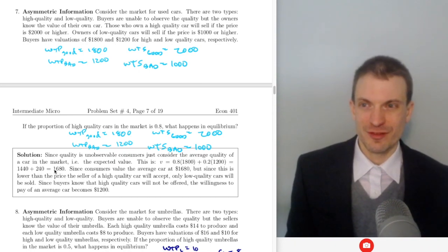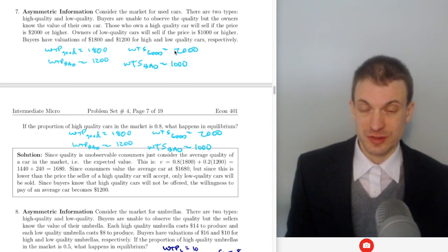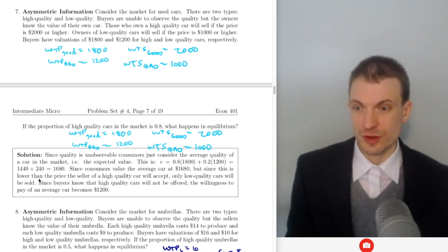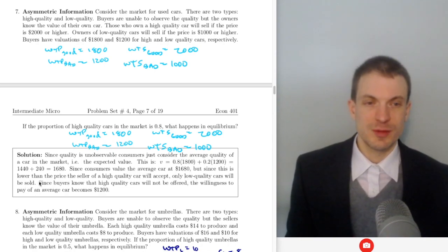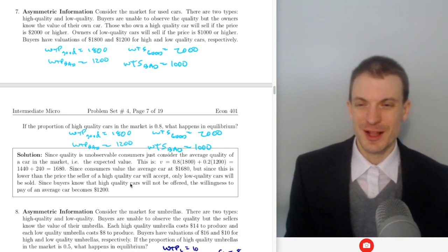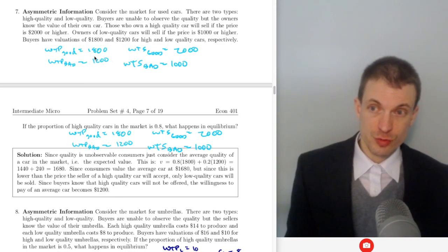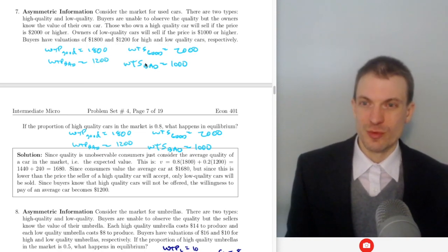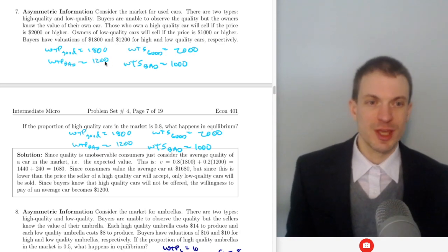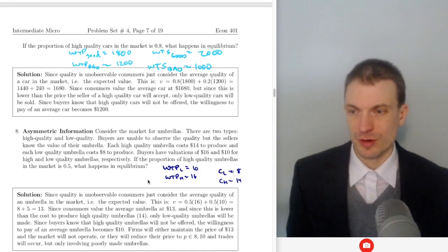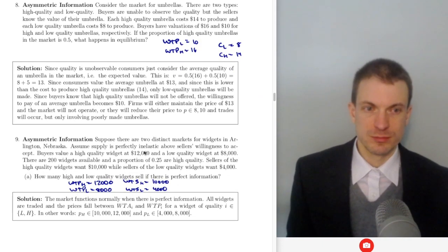Since consumers value a randomly selected car at $1,680, but sellers won't sell good cars for less than $2,000, only bad cars will trade. Since the price is lower than what a high quality seller will accept, only low quality cars will be sold. Beliefs are correct in equilibrium, so buyers correctly infer that 0% of the cars are good. The willingness to pay crashes down to $1,200, and the price of the car traded will fall somewhere between $1,000 and $1,200, depending on the relative bargaining power of the two sides.